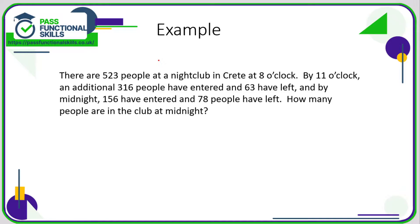Here's an example of a problem using adding and subtracting. We know that there are 523 people in this nightclub. Then 316 people have entered and 63 have left by 11 o'clock. So what I need to do is add 316 to 523 and then subtract 63 from that answer. So 523 plus 316...